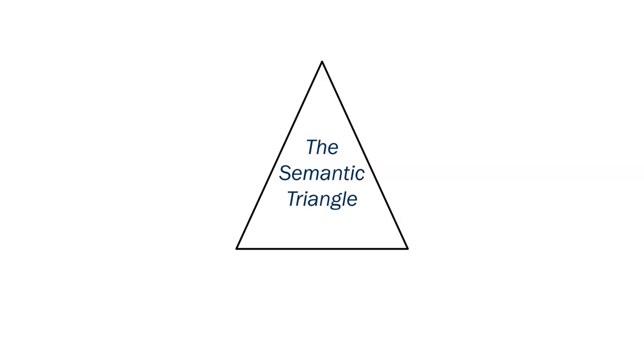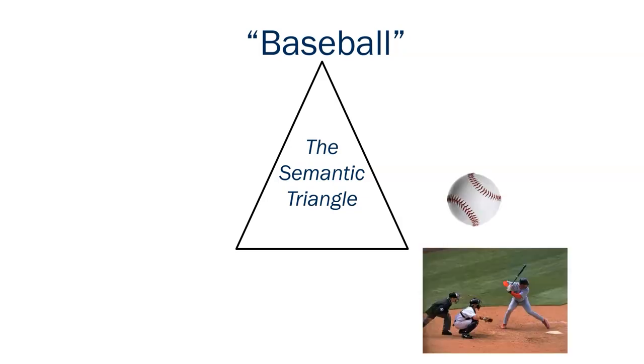For one last example with the semantic triangle, let's take a look at the word baseball. Here we see the symbol, a collection of letters in a specific order that represents what we want to communicate. Denotatively, if we looked up baseball in the dictionary, we would find two meanings, one describing the actual ball used in the sport, and another describing the game itself. One player at bat, nine in the field, three strikes, four balls, etc.